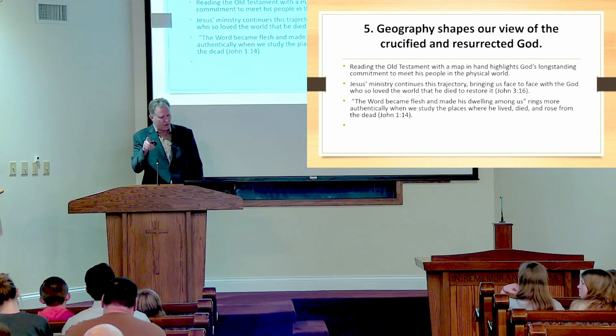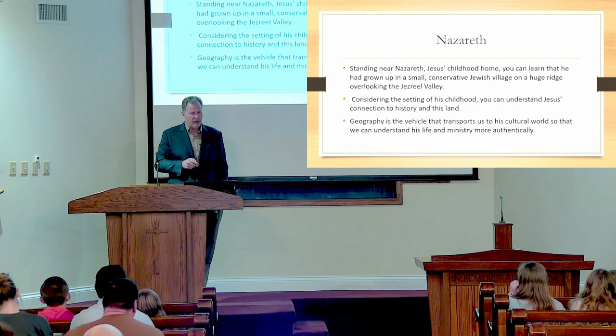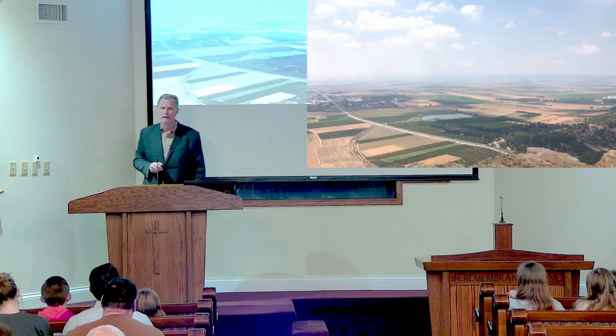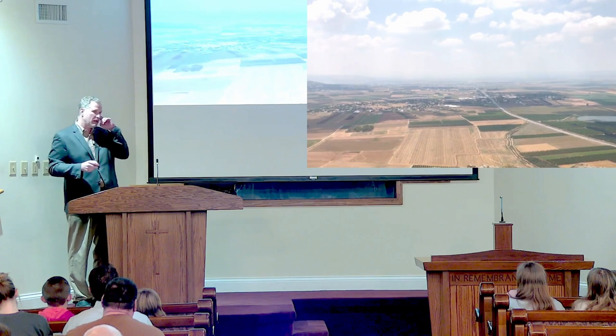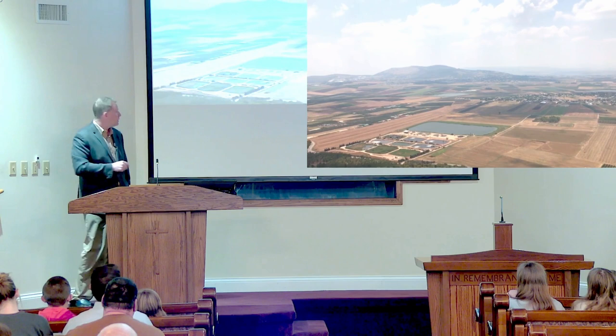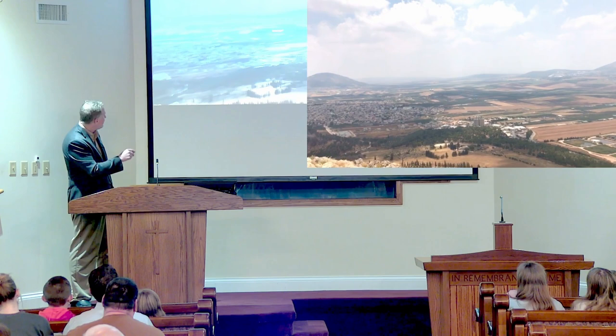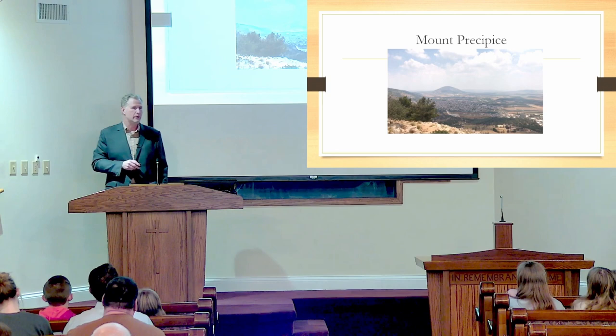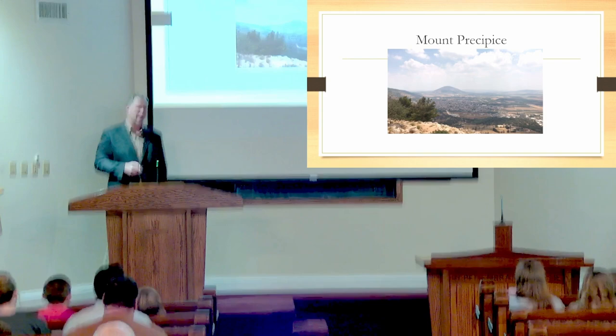Finally, geography shapes our view of the crucified and resurrected God. When we think of Nazareth, where it all started — Jesus left his childhood home. Remember, Nazareth sits upon this massive ridge well above sea level, probably 1,000 feet above sea level. This is Jesus' view as a child looking out over the plains — this is the Jezreel Valley, that's Mount Gilboa, Mount Moray is over here, and that's Mount Tabor right there, where Deborah and Barak led their armies. Think about Jesus in his childhood looking out and seeing all those sights and remembering the events that took place.